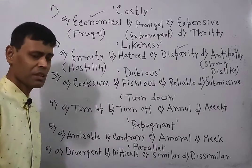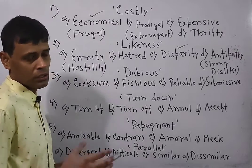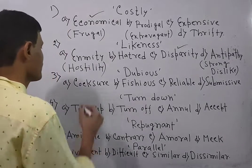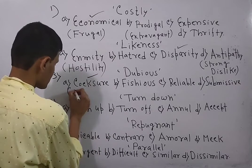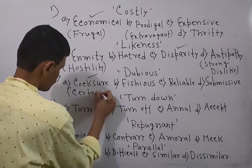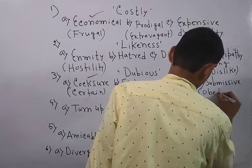On the other hand, cocksure means extremely certain. So if dubious means doubtful, its opposite should be certain. This means cocksure will be the answer. So this means certain, doubly sure. Submissive means obedient, extremely obedient.